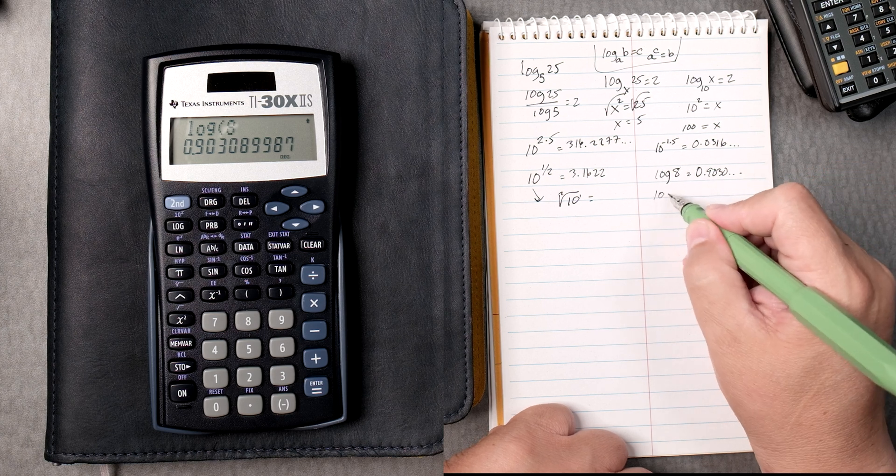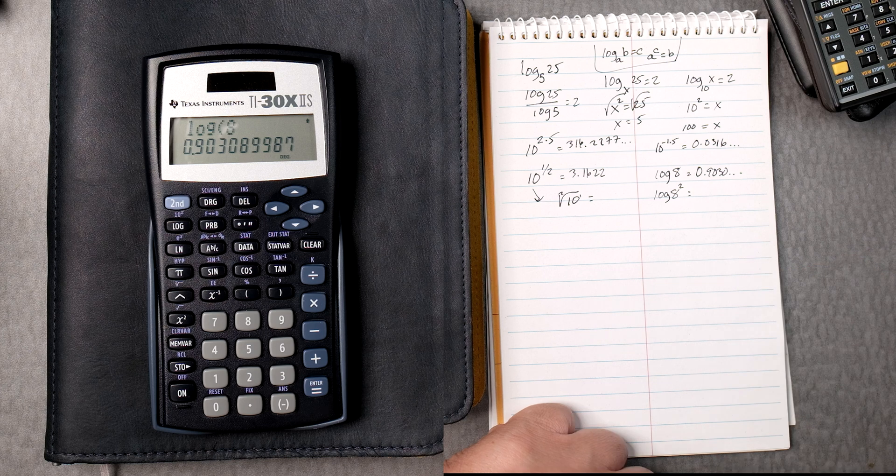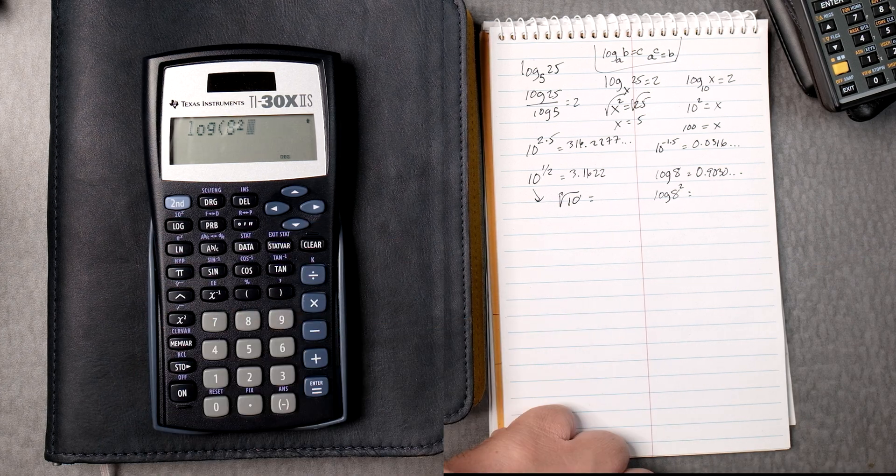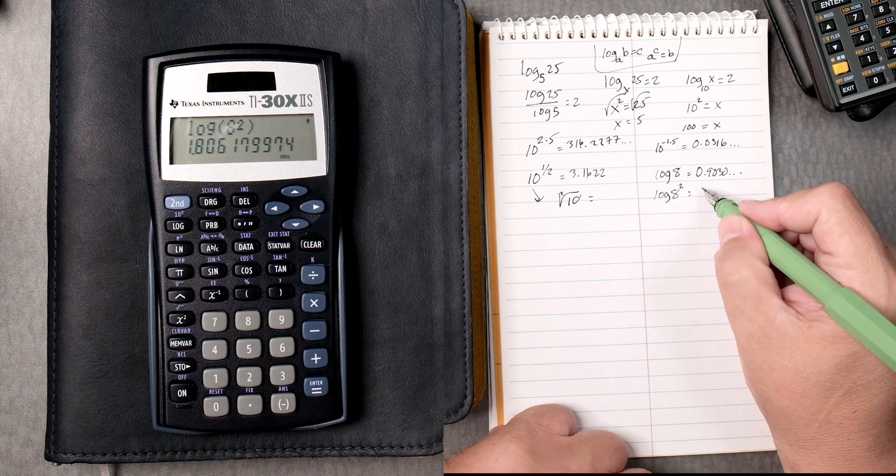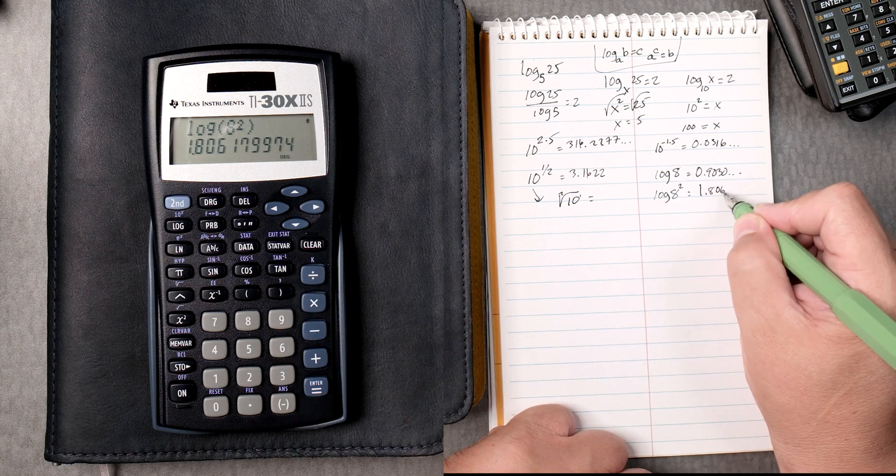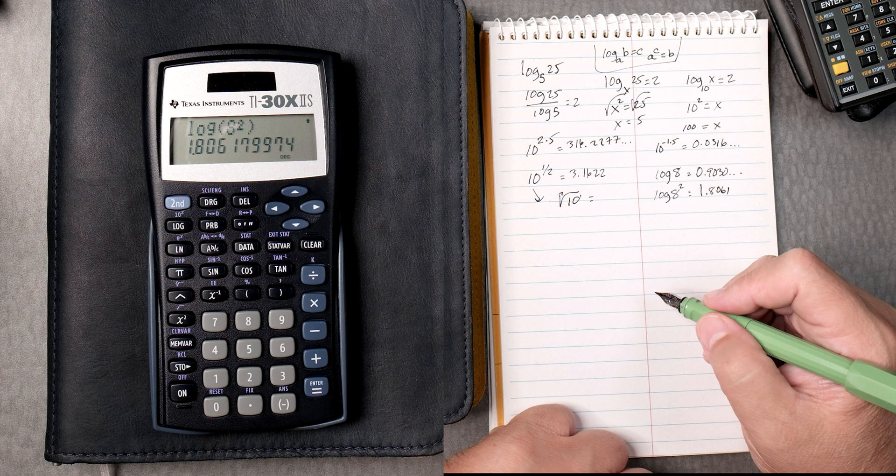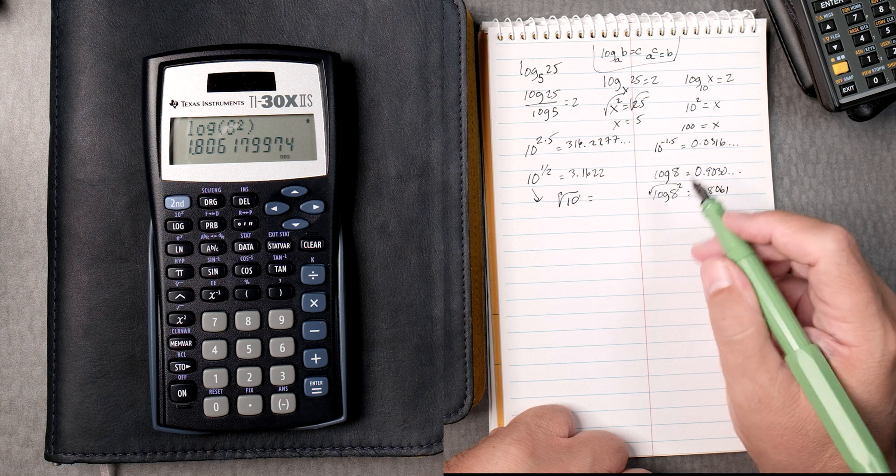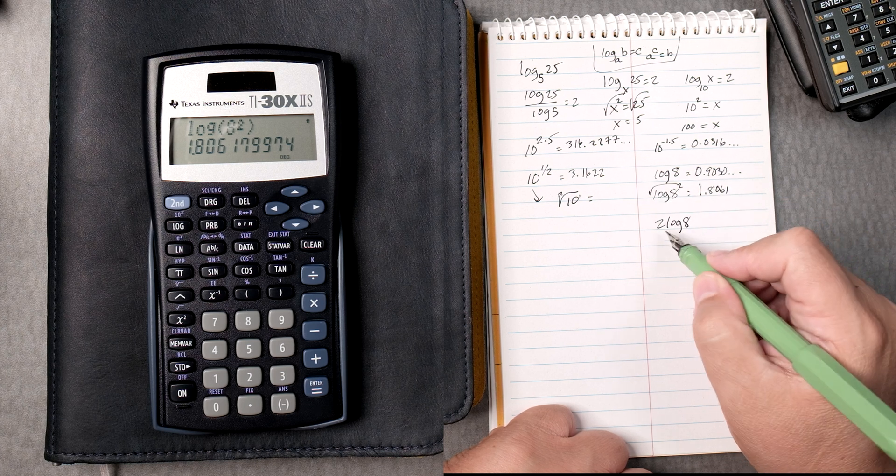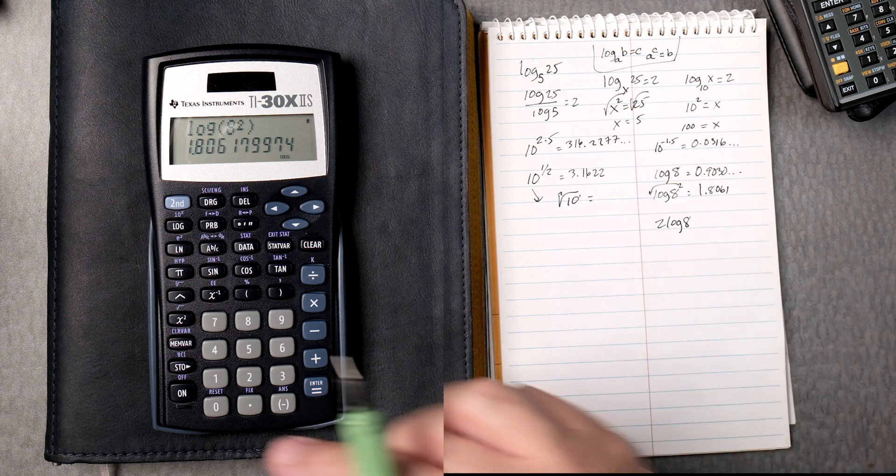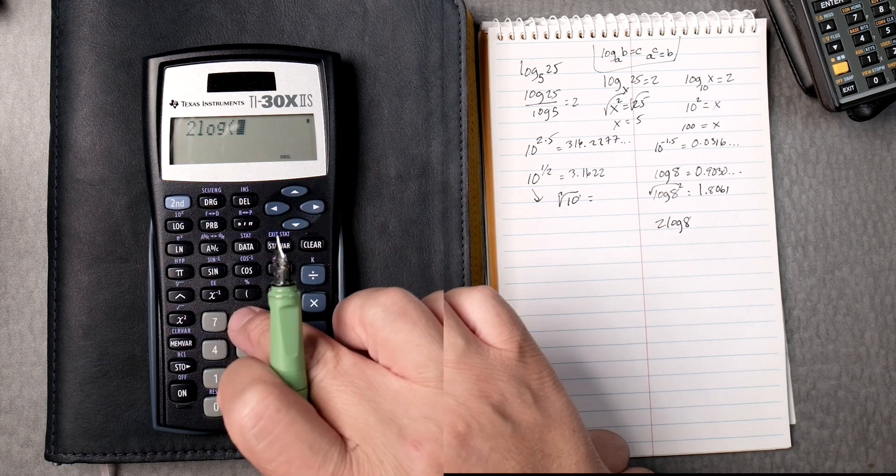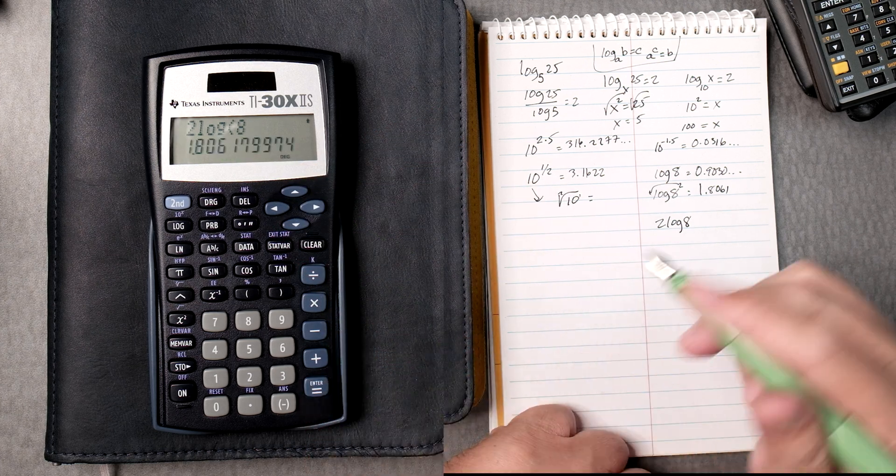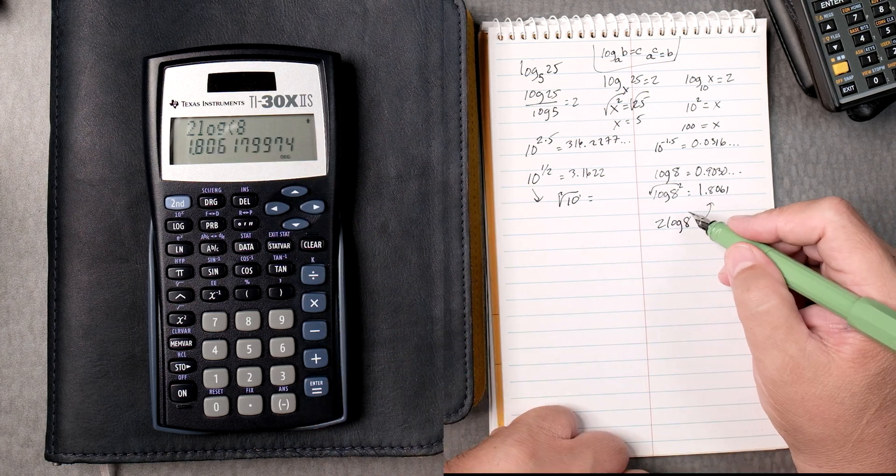How about the log of 8 squared? Well, we take the log, 8, and then you square it, close it, equals 1.8061. There's a rule that says if you bring down the 2, you can do the same calculation, 2 times the log of 8. Well, that's 2, log 8. Here, because it's an algebraic calculator, it automatically multiplies it, and you get the same answer.